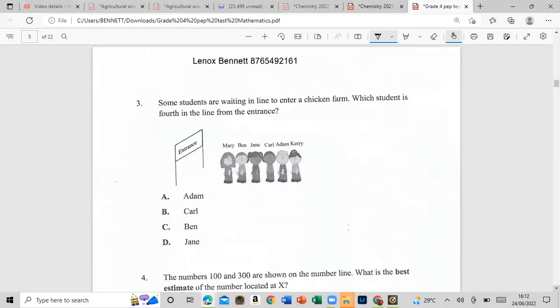Some students are waiting in a line to enter a chicken farm. Which student is fourth in the line from the entrance? Notice they say from the entrance. So this is first, second, third, fourth, fifth, and sixth. If it was from here, it would be the reverse and it could have been Jane, but notice they say from the entrance. Notice the keywords, they're teaching you guys to analyze.